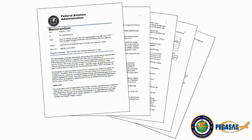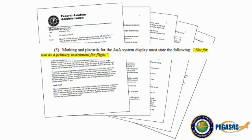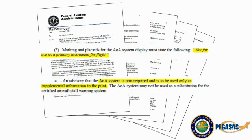The FAA has disseminated a press release indicating that they are streamlining the process for approval of angle of attack equipment in various aircraft. It is important to note that within the press release design requirements, the FAA has mandated that a placard be placed indicating that the AOA system is not for use as a primary instrument for flight. Within the operational limitations section, they have stated that an AOA system is non-required and is to be used only as supplemental information to the pilot.